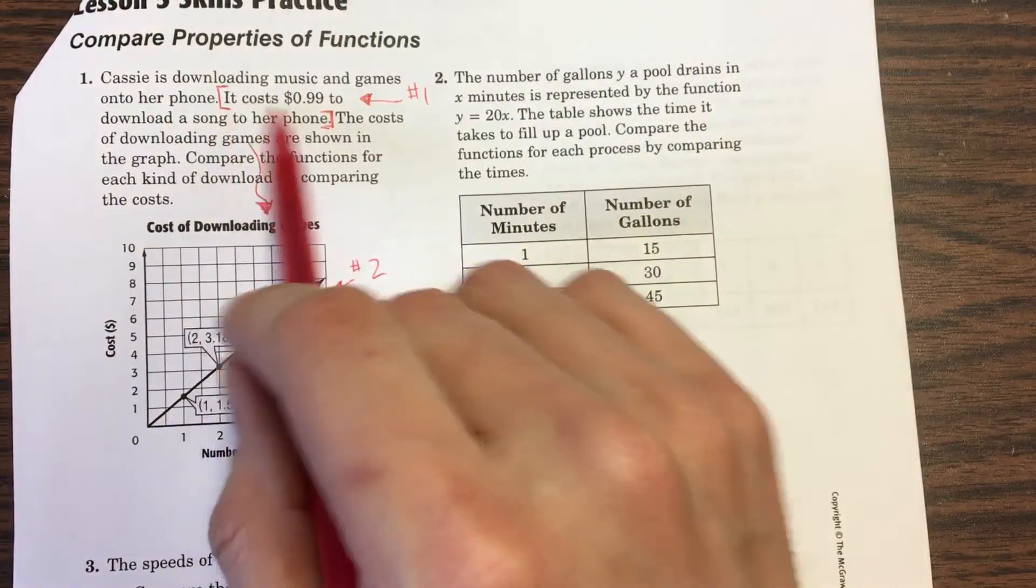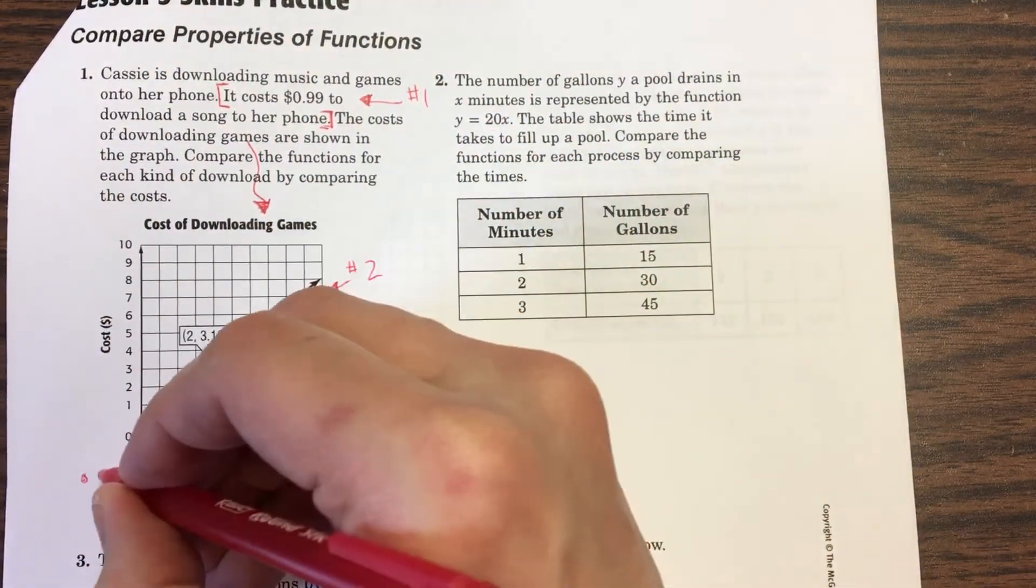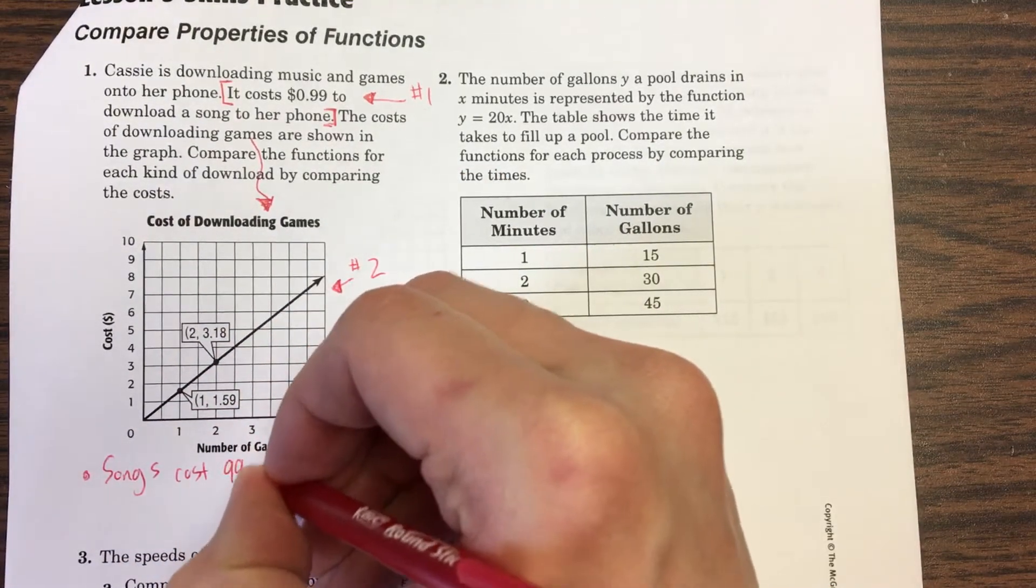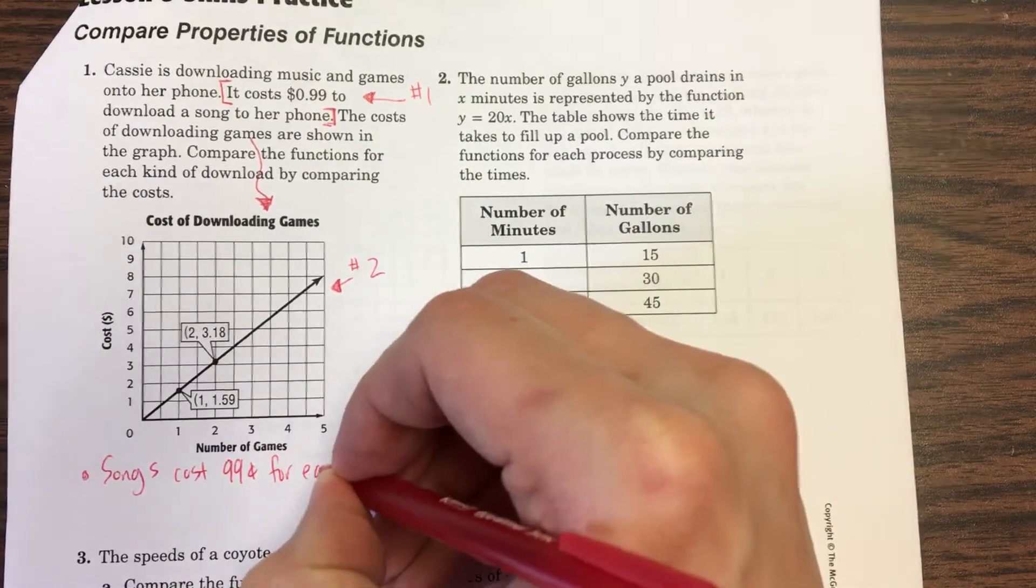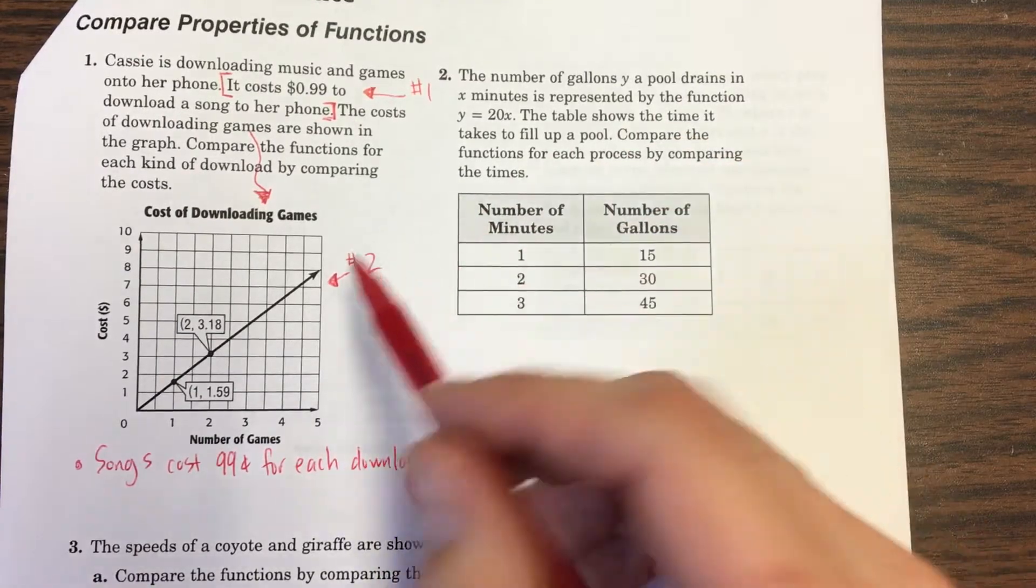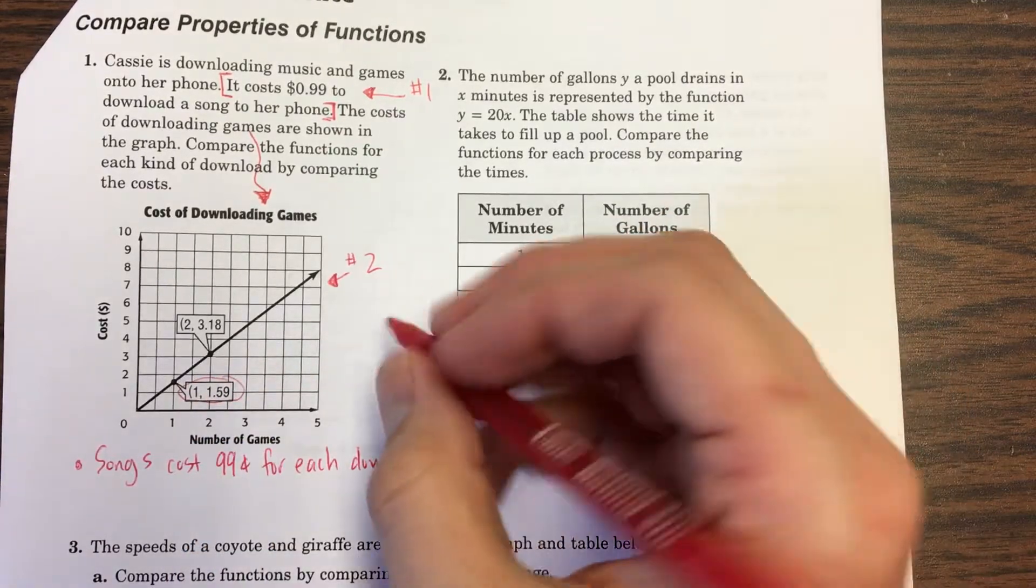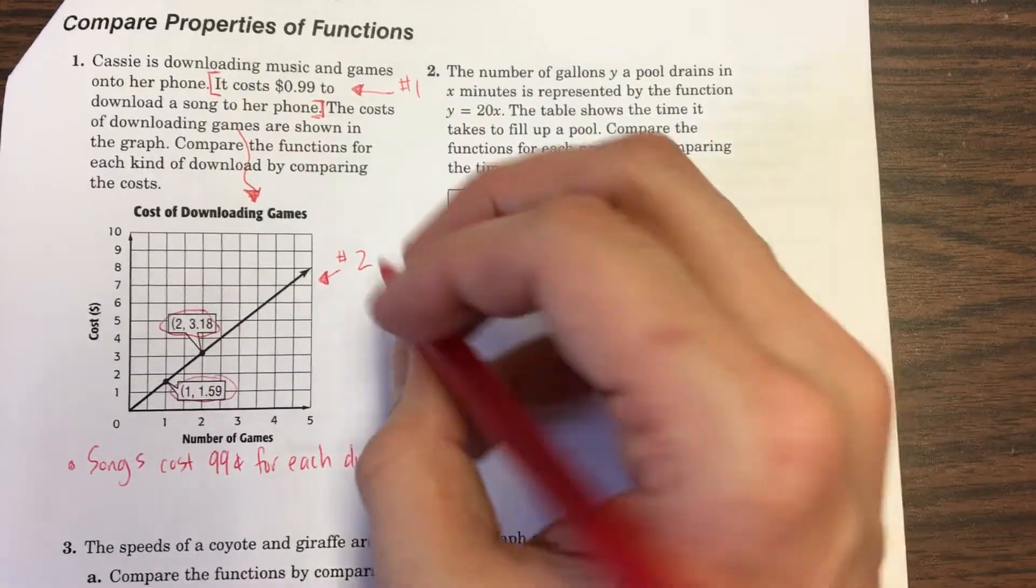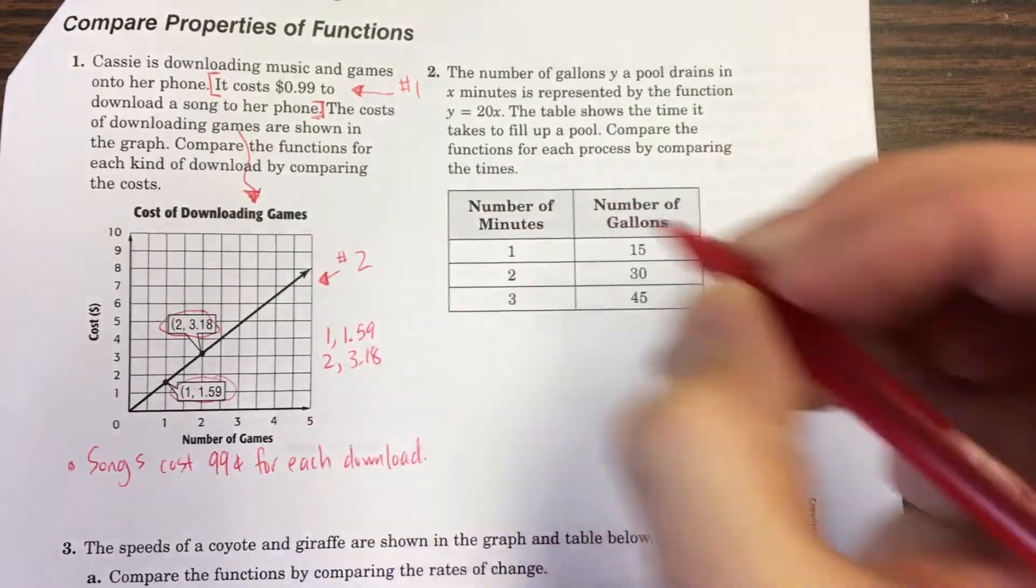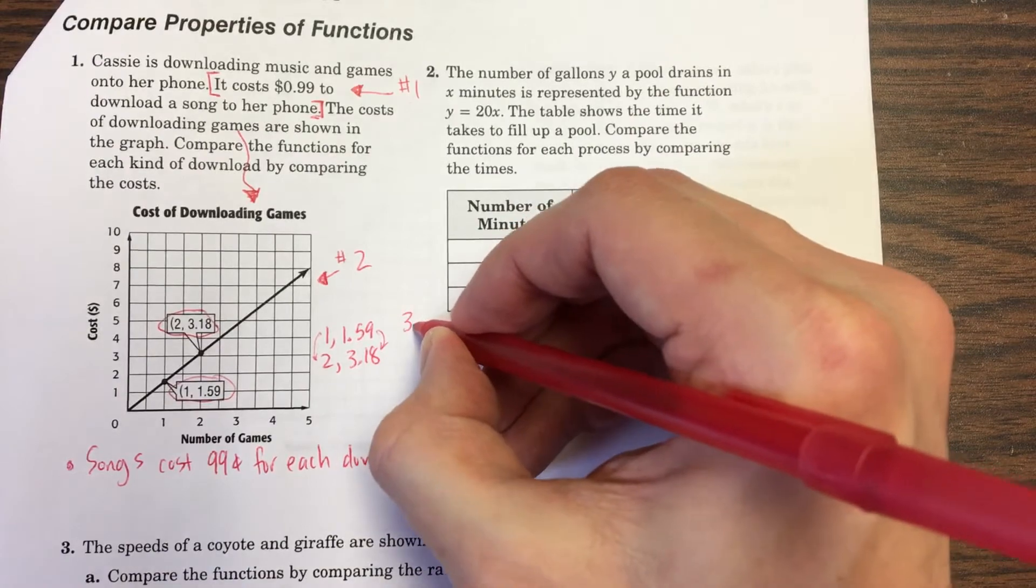It costs 99 cents for her to download a song to her phone. So this is the songs. They've hidden this information for the songs up here in this paragraph. The costs for downloading games are shown in the graph. So the games are down here. You have situation number one right here in the sentence, and then situation number two is down here in the graph. Now, you don't actually have to label it with the arrows like I am. I'm just trying to show you where it is. So what do we have to do? Compare the functions for each kind of download by comparing the costs.